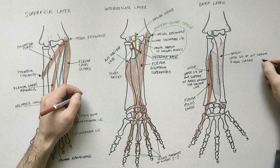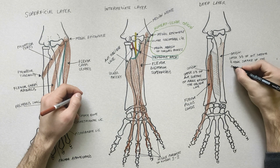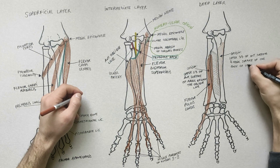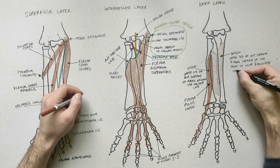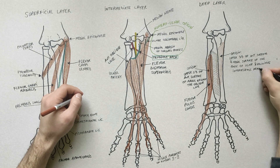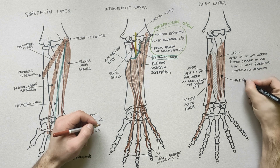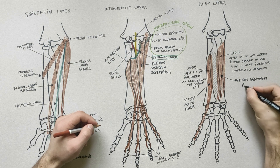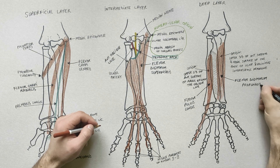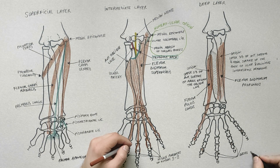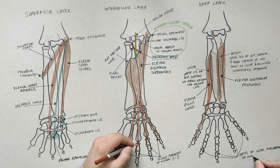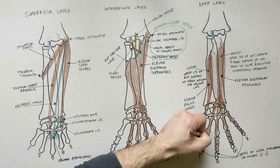The flexor digitorum profundus has its origin from the upper three-fourths of the anterior and medial surfaces of the body of the ulna and the adjoining part of the interosseous membrane. This muscle inserts by way of four tendons into the bases of the distal phalanges of the last four fingers.